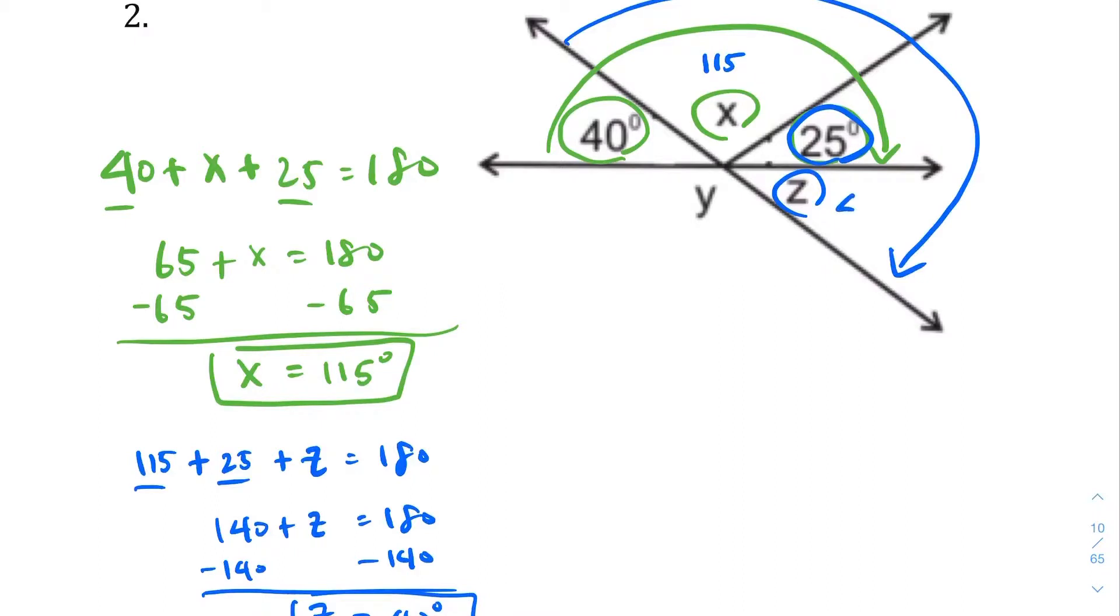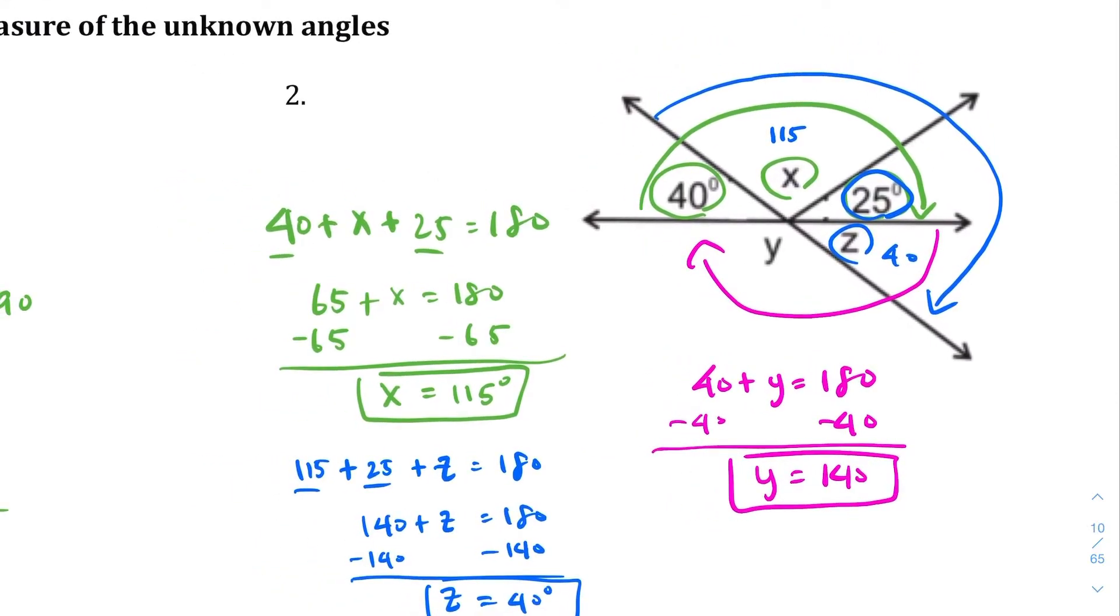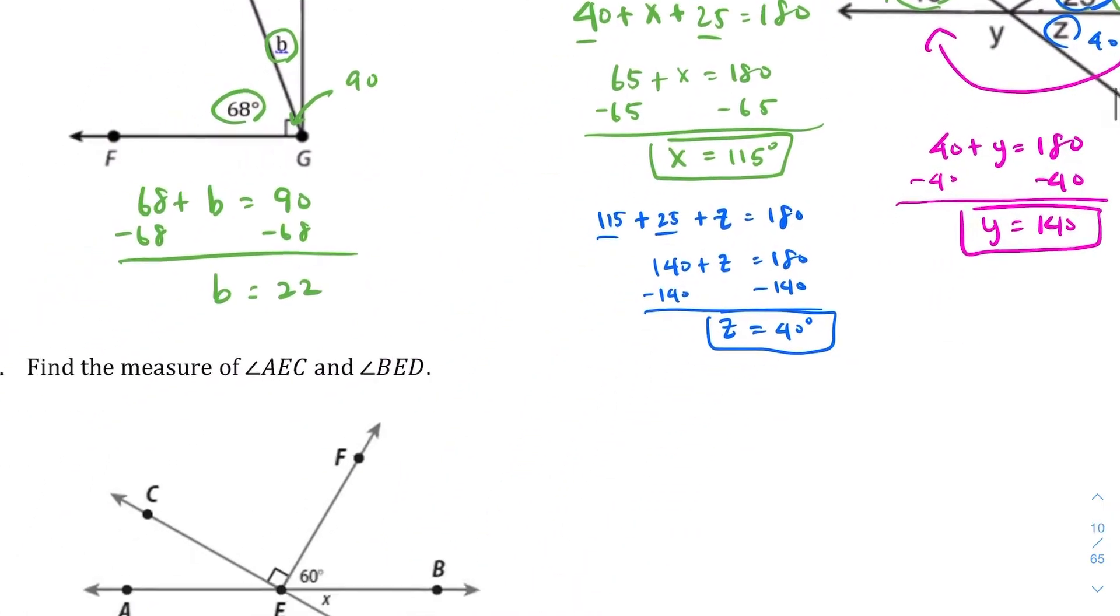Now, if z is 40, let's change color again. Z + y is another linear pair. Since we know z equals 40, 40 + y is also going to equal 180. Subtract 40 from both sides. You end up with y equals 140. So three separate equations. Hopefully, if we do them one by one, these should have been pretty easy to understand. That was question two.